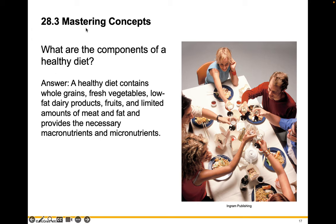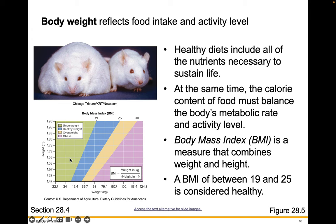What are the components of a healthy diet? Take a moment, write this down in your own words, and make sure that you touch on vitamins and minerals, which are micronutrients, as well as the macronutrients you need to consume to have a healthy diet. Body weight reflects food intake and activity level. Healthy diets include all of the nutrients necessary to sustain life. The calorie content of food must balance the body's metabolic rate and activity level. A body mass index is a measure that combines weight and height, and BMI scores of 19 through 25 are considered healthy.